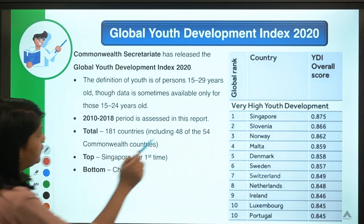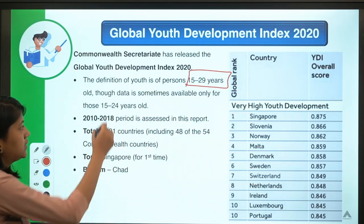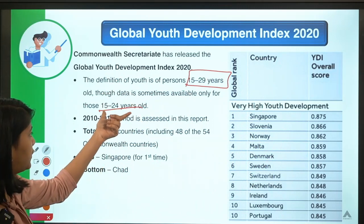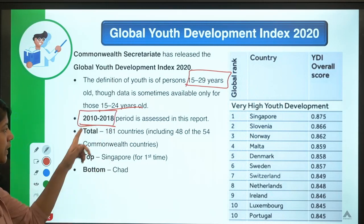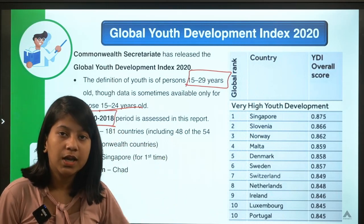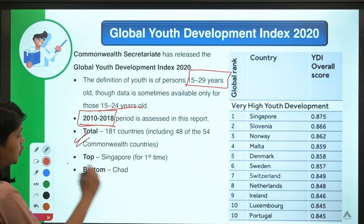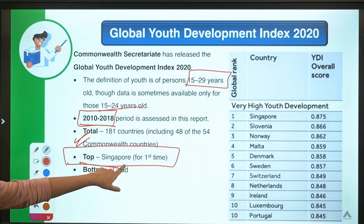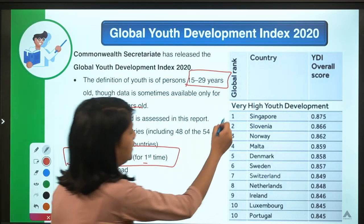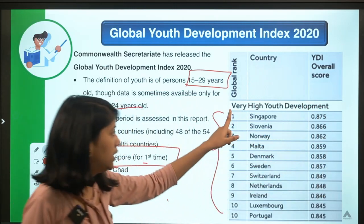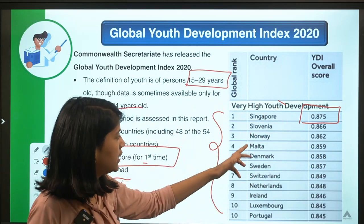Youth is defined as persons aged 15 to 29 years, though for some countries data was available only for the 15 to 24 age range. The assessment period is 2010 to 2018. Singapore has topped this index for the first time. The top five countries are Singapore, Slovenia, Norway, Malta, and Denmark.